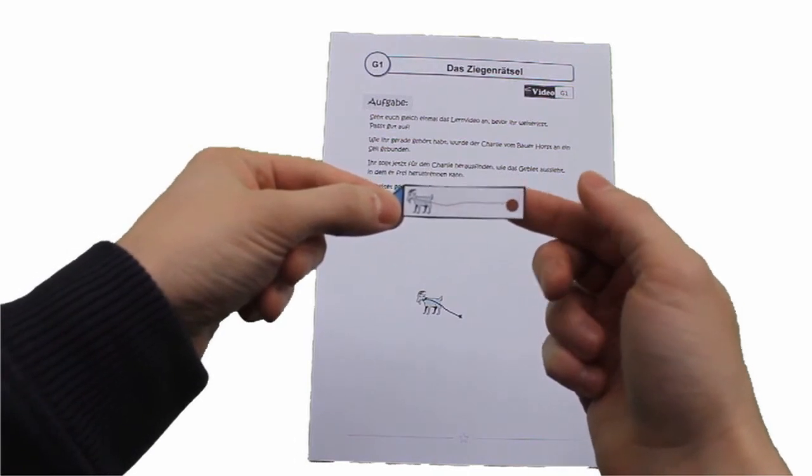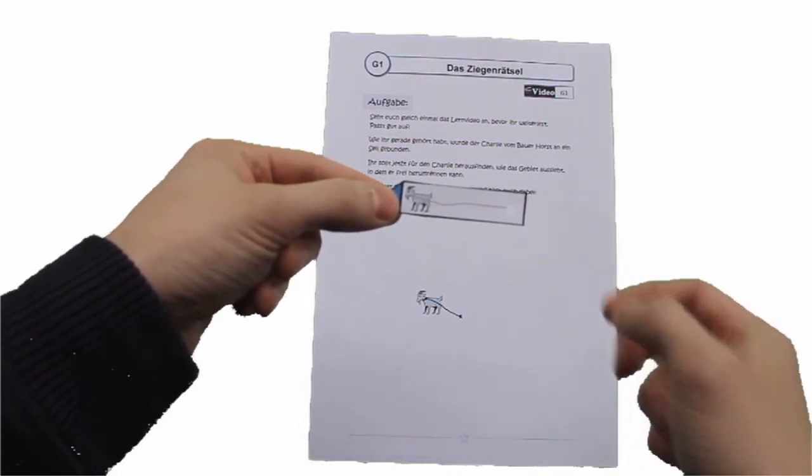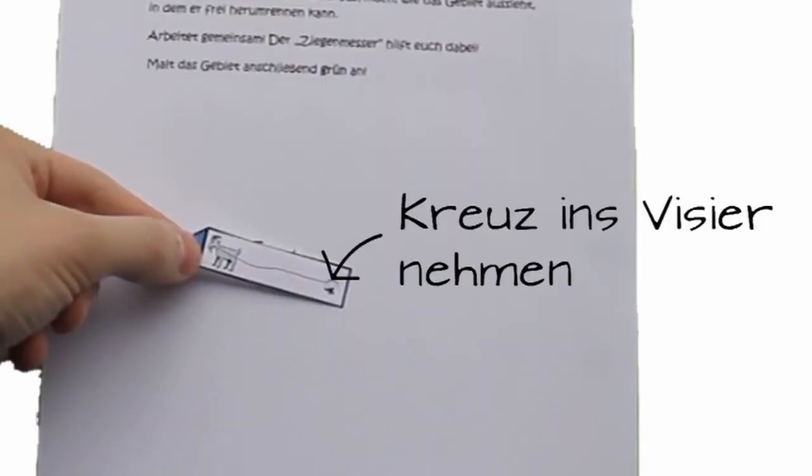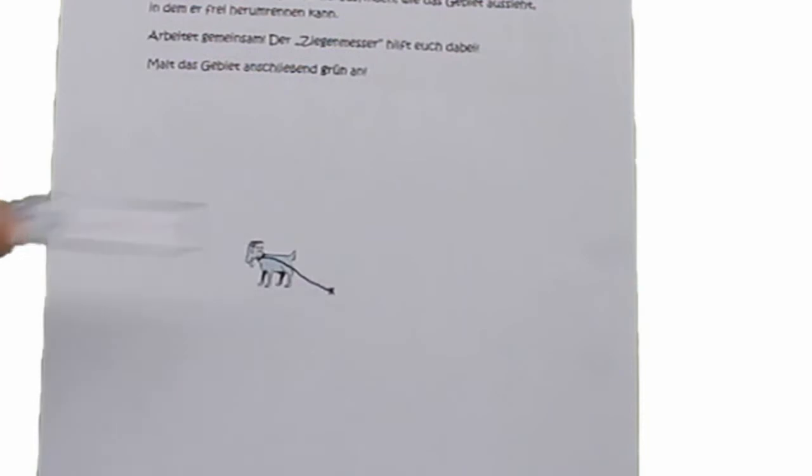So, als nächstes legt ihr dieses Visier genau dort drauf, bei dem Kreuz, wo der Charlie festgebunden ist. Also das Visier ist dazu da, damit ihr das genau dort drauflegen könnt, wo der Charlie festgebunden ist. Und jetzt liegt das Visier auf dem Blatt Papier und zeigt euch genau, wie weit der Charlie vom Kreuz, wo er angebunden ist, wegrennen kann.